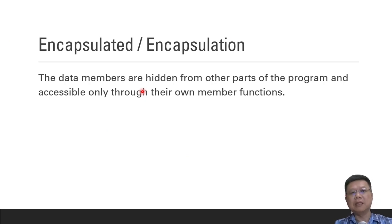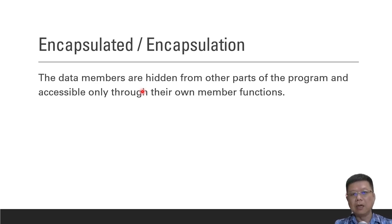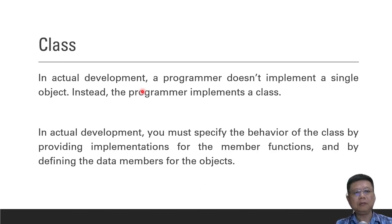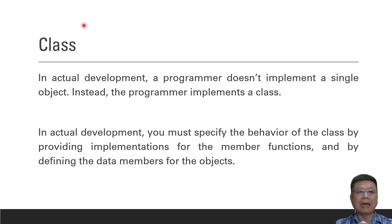Encapsulation means that the data members or variables will be hidden and cannot be accessed by other objects or other parts of the program. Even though we have the same variable names, it will not crash in our program. This whole concept is called OOP — object oriented programming — and we also name it as classes.